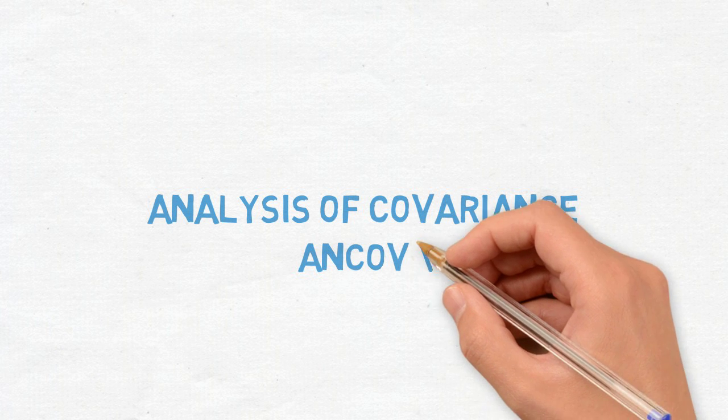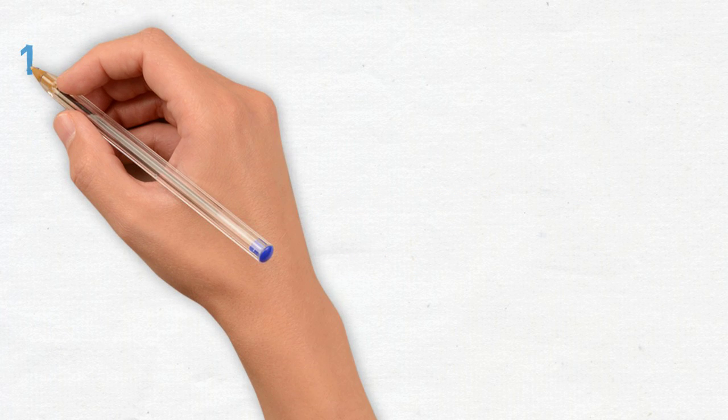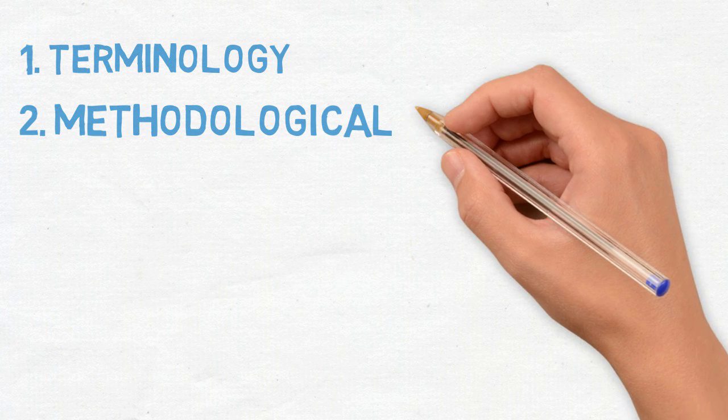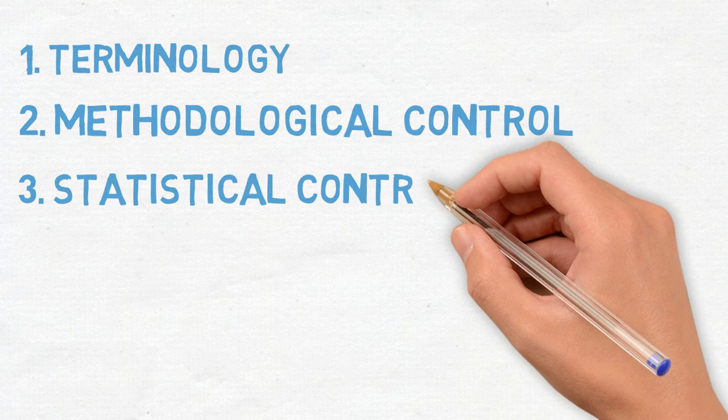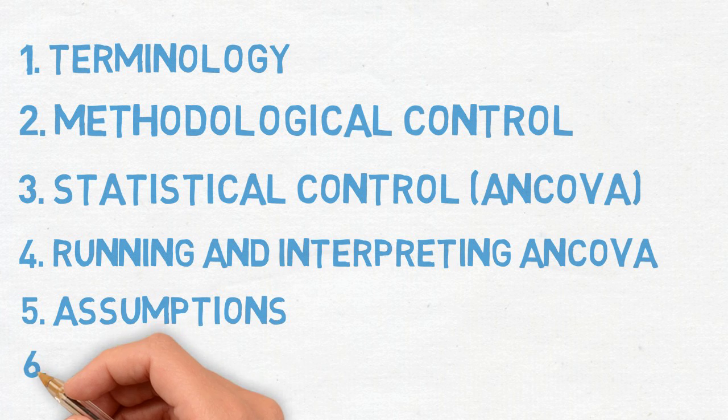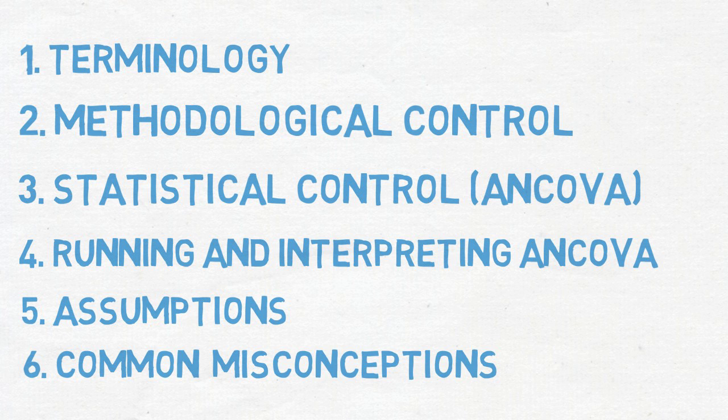Throughout this video, I'll be using neuropsychological examples to illustrate some of the concepts. We'll start by going over the terminology, talk about how to control for covariance methodologically as well as statistically, how to run and interpret an ANCOVA and all of its assumptions, and we'll conclude by talking about some common misconceptions underlying ANCOVA.